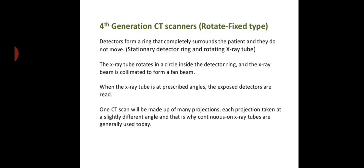Now let us talk about the fourth generation CT scanners, which is rotate-fixed. Why it is called fixed? Because in this, only the x-ray tube is rotating and the detectors are stationary. Detectors form a ring that completely surrounds the patient and they do not move. The x-ray tube rotates in a circle inside the detector ring, and the x-ray beam is collimated to form a fan beam. When the x-ray tube is at pre-prescribed angles, the exposed detectors are read. One CT scan will be made up of many projections, each projection taken at a slightly different angle, and that is why continuous on x-ray tubes are generally used today.